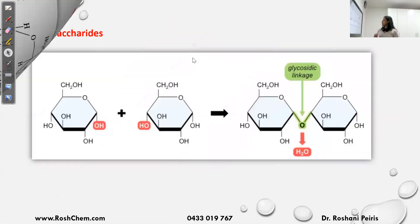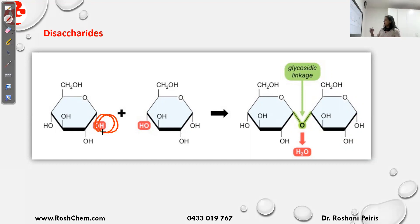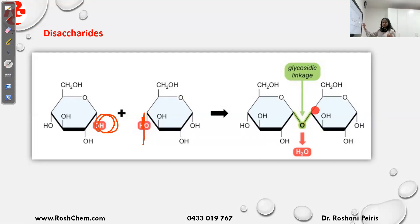Disaccharides are formed when two monosaccharides join together by condensation reactions. You remove an OH from one monosaccharide and an H from the other to give one water molecule. The remaining oxygen bonds carbon from one unit to carbon of the other, forming the new functional group COC — called the glycosidic linkage or ether linkage. So in disaccharides we have glycosidic linkages. When you make one disaccharide, one water molecule is removed.